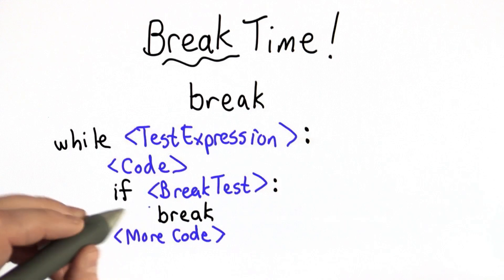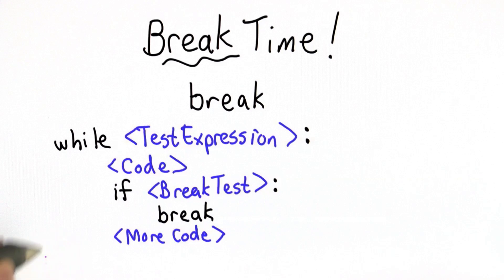So whatever we had here, this is more code that was in the while block, that will get skipped, and we'll jump to this point, which is the code after the while.